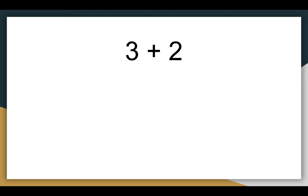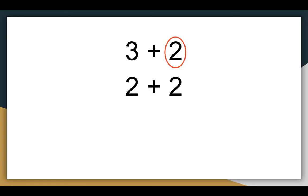Let's look at another example: three plus two. To add with near doubles, I'm going to find my smaller number. Looking at three and two, I know that two is my smaller number. So think about which doubles fact you would use to help solve three plus two. You're right — it's two plus two. A doubles fact means both numbers you're adding are the same.